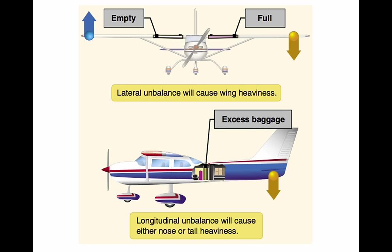CG limits: the specified forward and aft points within which the CG must be located during flight, indicated on pertinent aircraft specifications. CG range: the distance between the forward and aft CG limits. Datum, or reference datum: an imaginary vertical plane or line from which all measurements of arm are taken, established by the manufacturer. Once the datum has been selected, all moment arms and the location of CG range are measured from this point. Mean aerodynamic chord (MAC): the average distance from the leading edge to the trailing edge of the wing. Moment: the product of the weight of an item multiplied by its arm, expressed in inch-pounds. Total moment is the weight of the airplane multiplied by the distance between the datum and the CG.